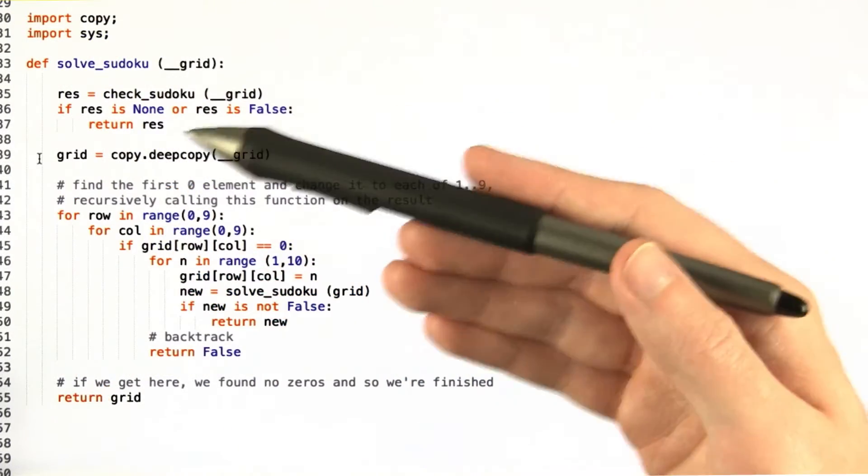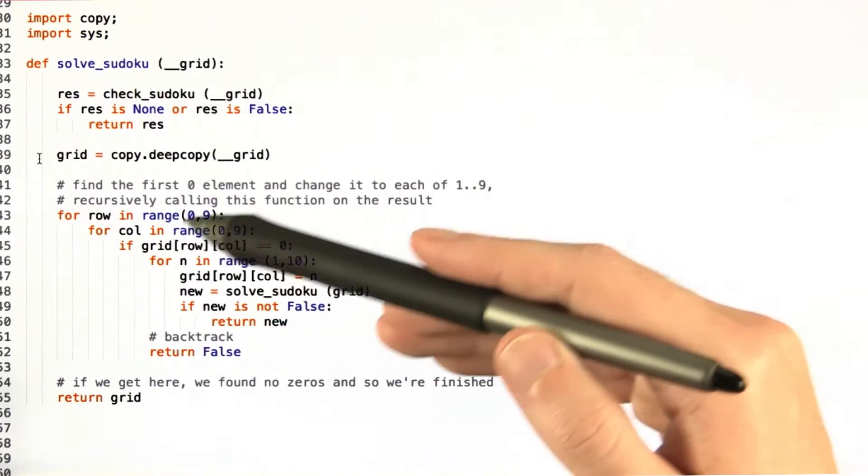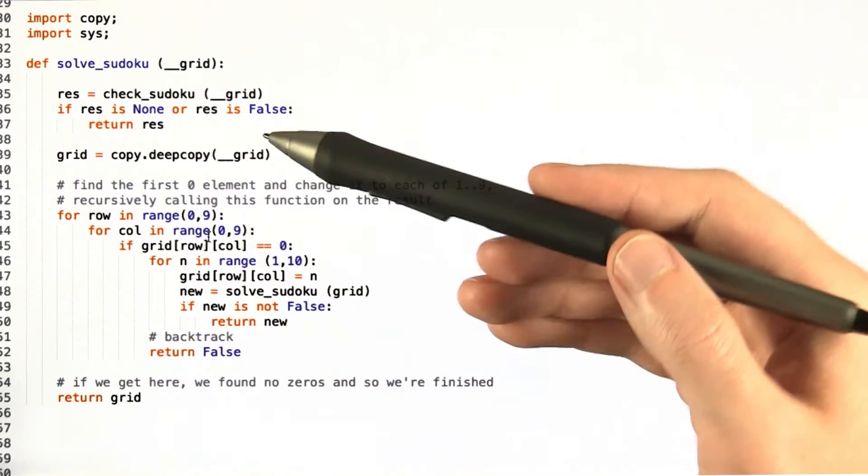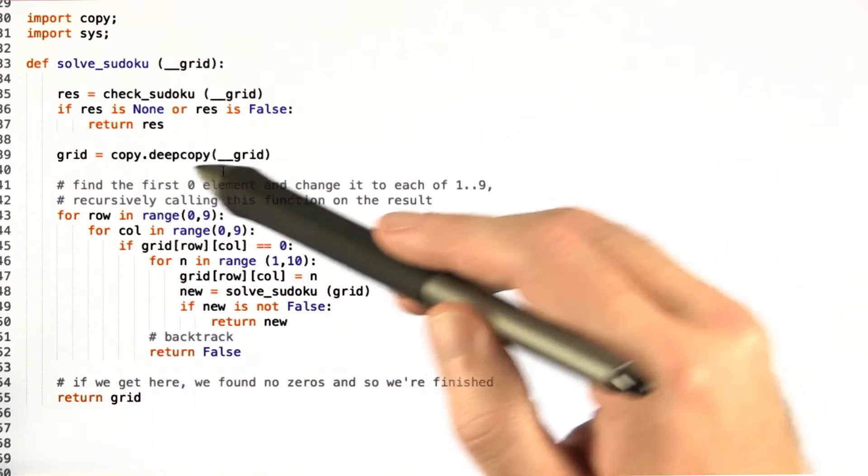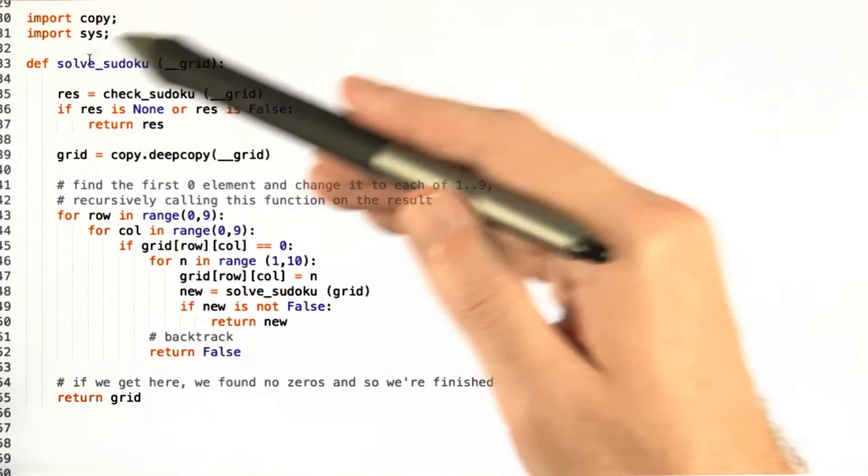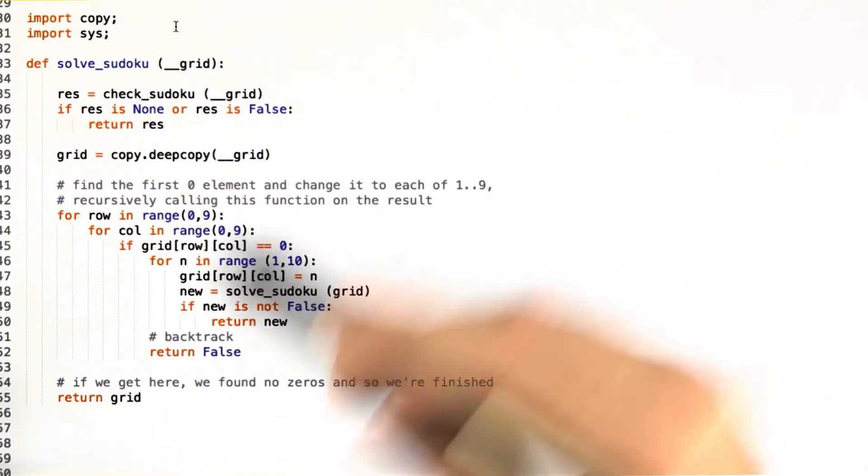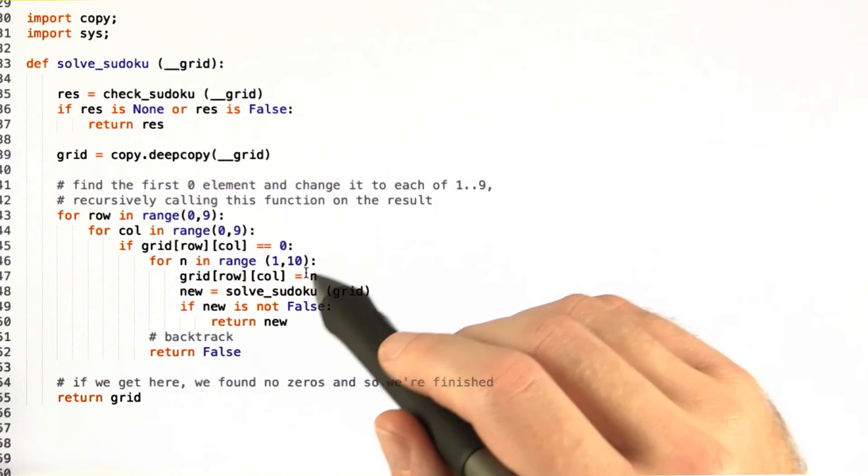After that, solve sudoku is actually fairly short if not exactly pretty. Import copy and sys here and copy is the only one you use here. Sys is used down below for something else entirely that was for testing purposes.